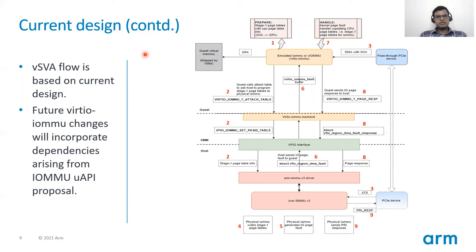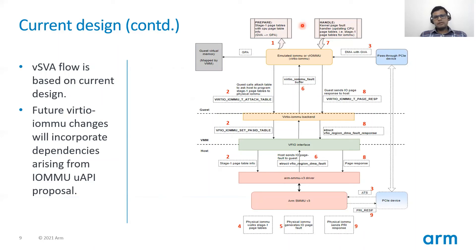Let's look at the virtual SVA flow based on the proposed design with VirtIO IOMMU support. First, the VirtIO IOMMU driver running in the guest kernel programs CPU page tables as stage 1 page tables for the device. It will call attach table in order to program these stage 1 page tables into the hardware SMMU v3. This attach table request will finally go down to the SMMU v3 driver running in the host kernel and the stage 1 page tables are programmed into the SMMU v3. Once the stage 1 page tables are programmed, the PCI device — which is now a pass-through device to the guest kernel — can initiate a DMA using the guest virtual address.